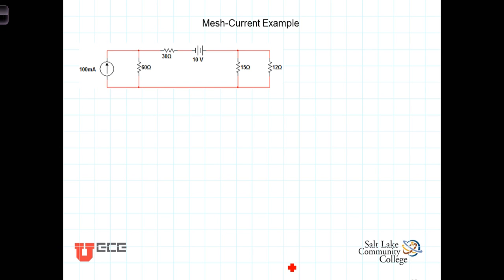Let's use this as an example to see how mesh current techniques can be used to calculate the voltage across that parallel combination of resistors. In order to do that, we're going to need to know the current flowing through either the 15 ohm or the 12 ohm, and then the voltage across that will be that current times the resistance.